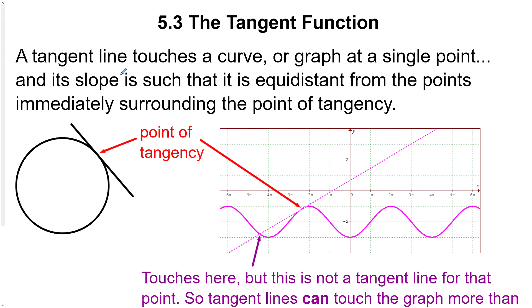Most people define a tangent line as a line that touches a curve or a graph at a single point, like this. And that would be its point of tangency, like this.